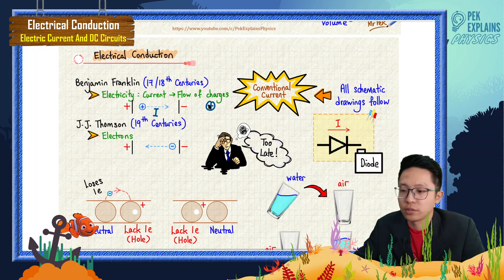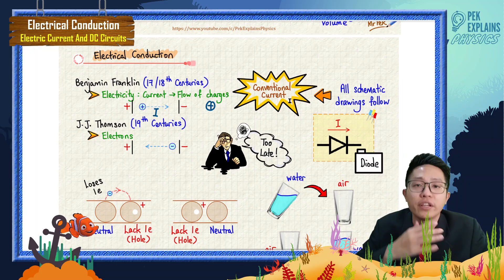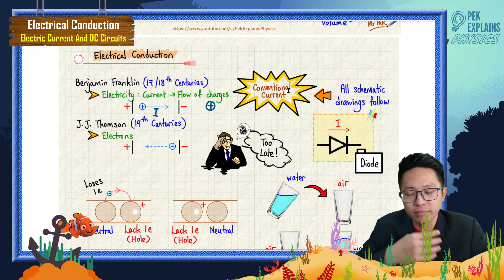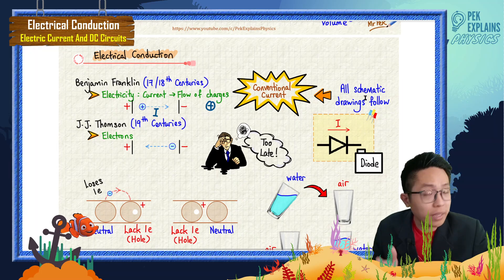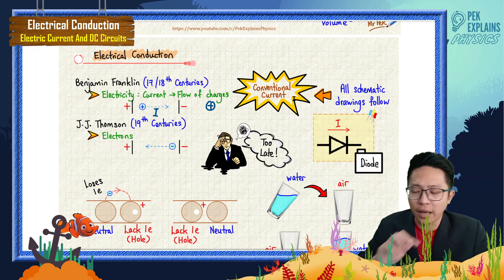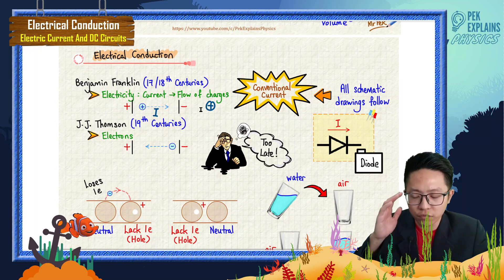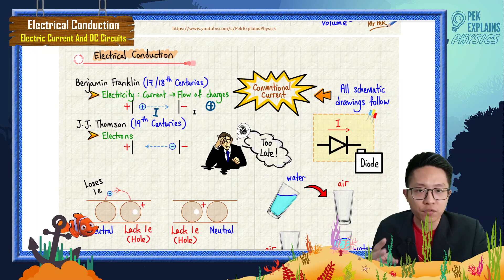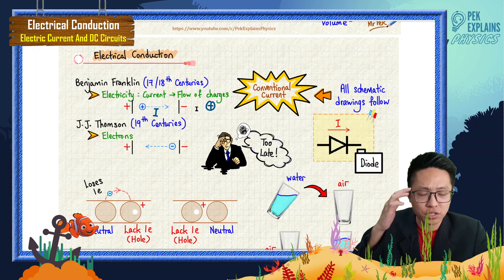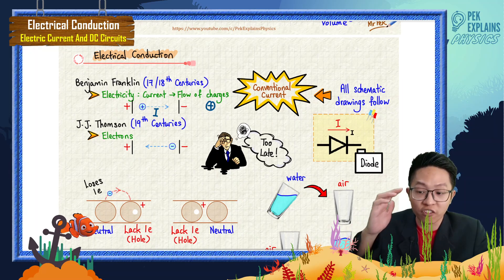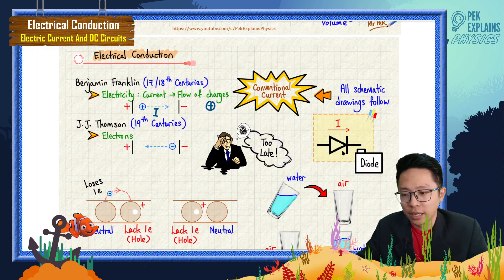That is what we know as conventional current — the original current. Since that time, all circuit schematic drawings follow this conventional current concept. All schematic drawings follow the idea of the flow of positive charge, where charge flows from the positive terminal to the negative terminal.